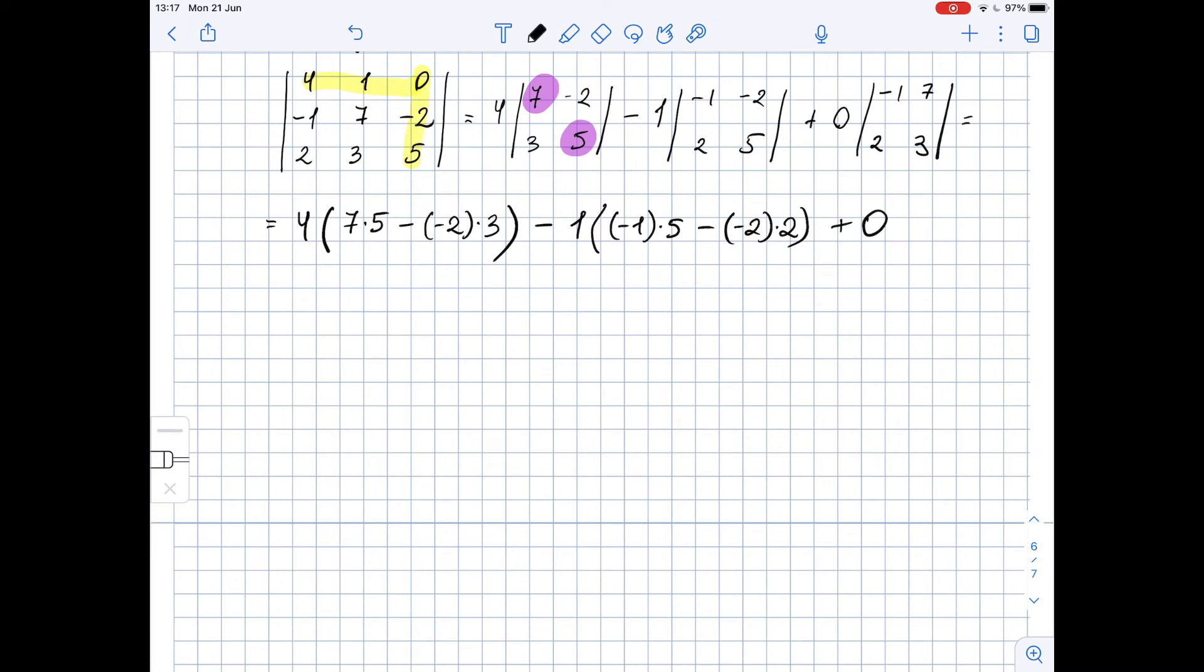And plus here we have obviously 0 because it's multiplied by 0. Well, let's simplify it and do the calculation. So we get 4 times 35 plus 6 minus 1 times negative 5 plus 4 and plus 0.